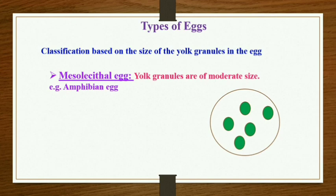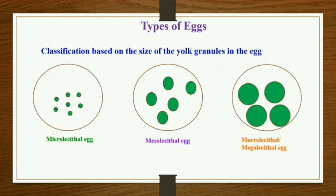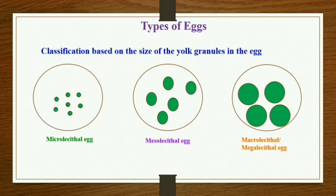I have made a comparative diagram where you will be able to compare the yolk granule size. In the microlecithal egg you see very small green color yolk granules. In the mesolecithal egg the size of the yolk granules is moderate, and in the macrolecithal or megalecithal egg the size of the yolk granules is very large. This is all about the classification of eggs. Thank you so much.